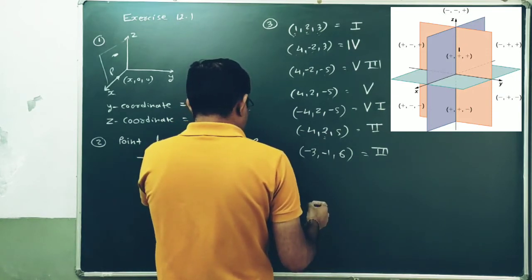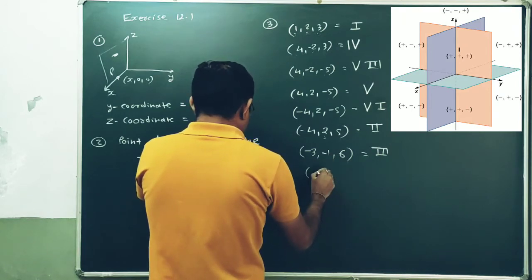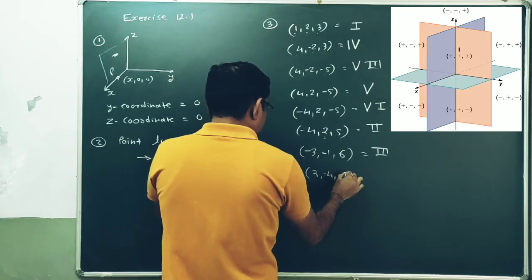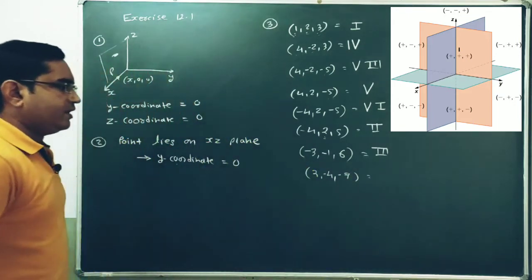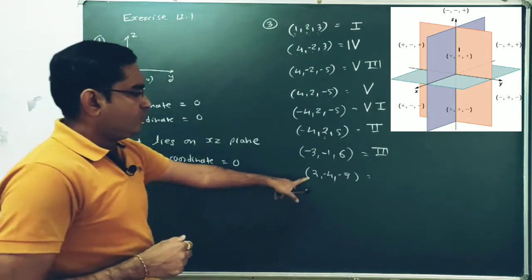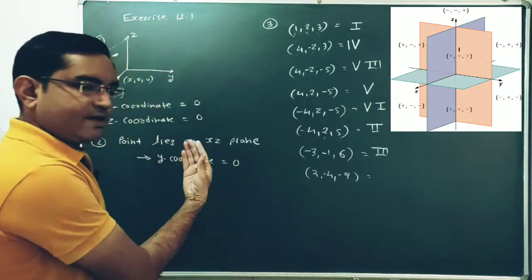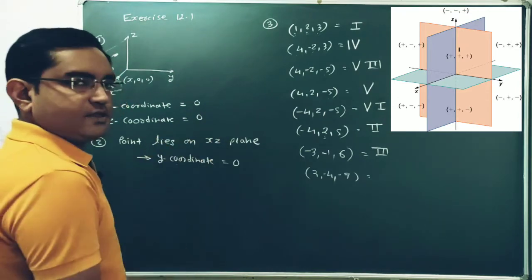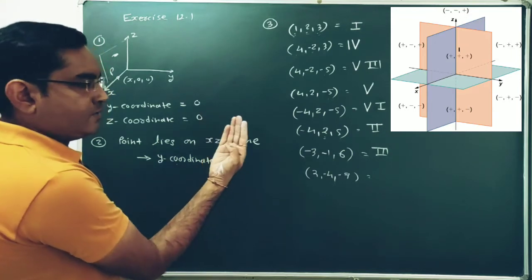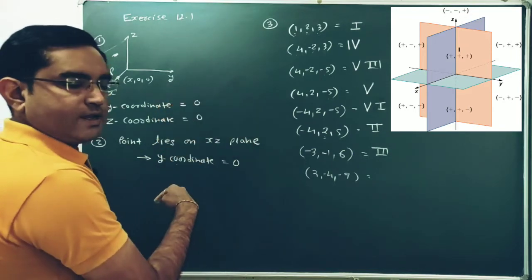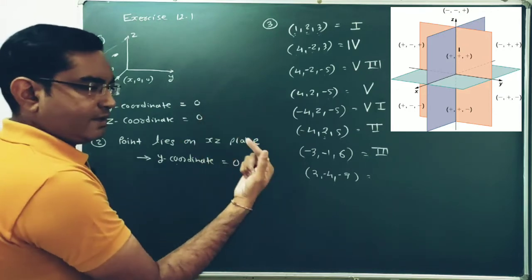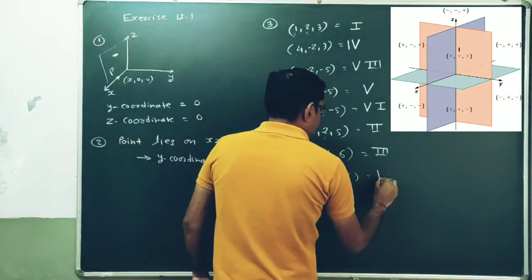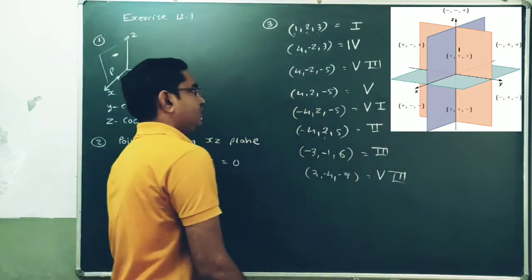Last point: (2, -4, -7). X is positive — front direction. Y is negative — left direction. Z is negative — downward direction. Front, left, and downward corresponds to octant number 8. So this point lies in octant number 8. That is how you can find the octant in which a given point lies.